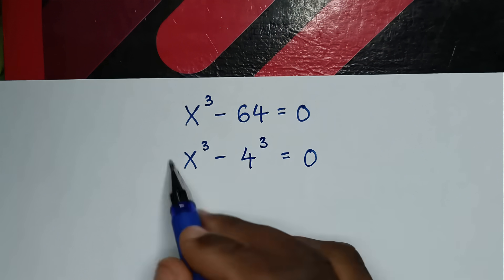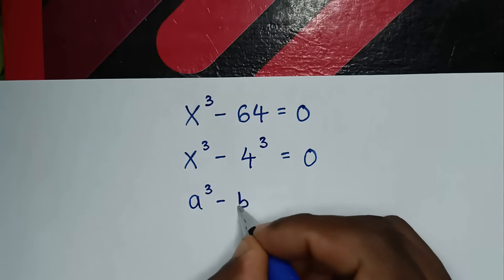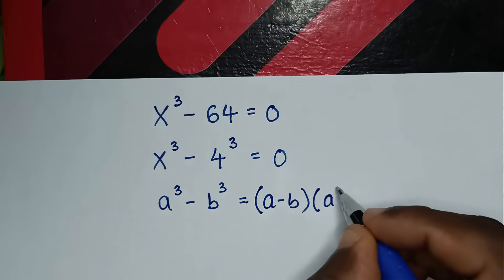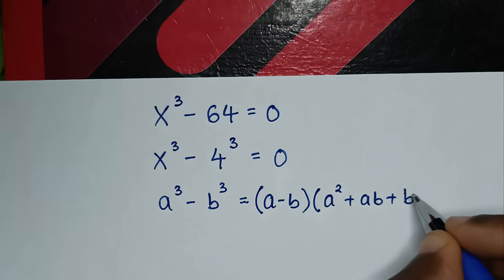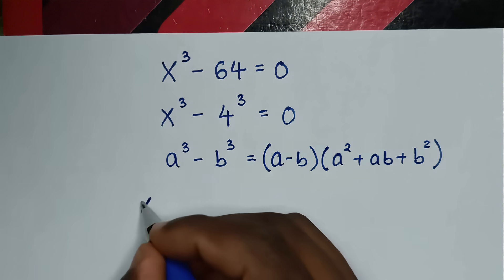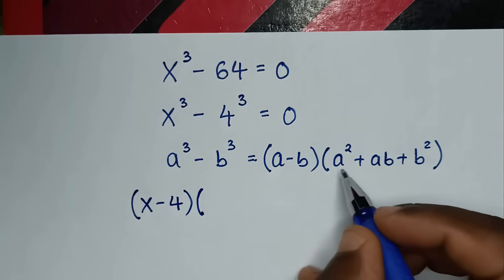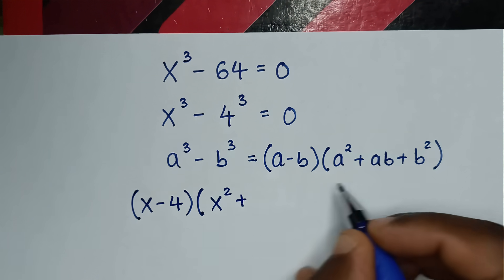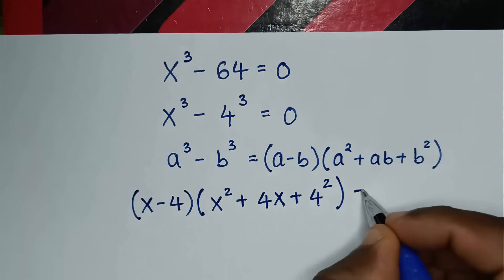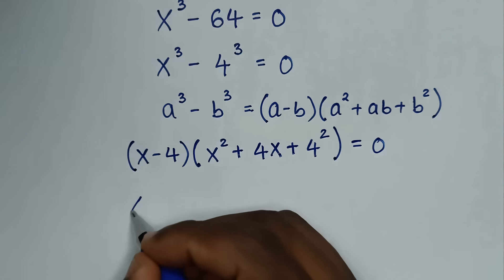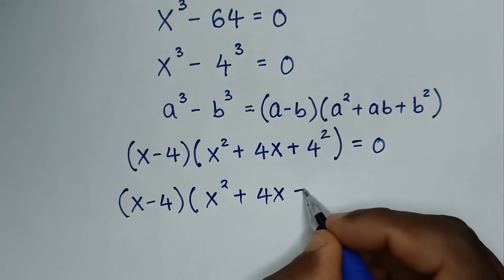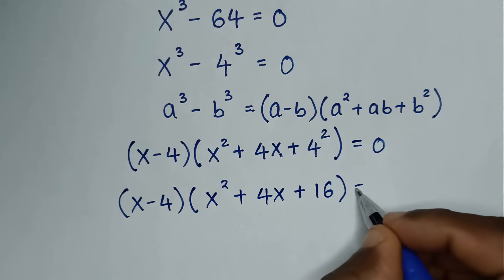So x power of 3 minus 4 power of 3 is equal to 0. This is in the form of a power of 3 minus b power of 3, which equals (a minus b)(a squared plus ab plus b squared). Applying this here: a minus b gives x minus 4, then x minus 4 bracket times x squared plus 4x plus 4 squared, which is 16, bracket equals 0. So x minus 4 times x squared plus 4x plus 16 equals 0.